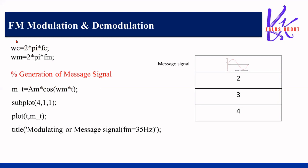To make our equations simpler, we define the angular frequency of the carrier as wc = 2π·fc, and the angular frequency of the message signal as wm = 2π·fm. Instead of writing 2π·fc·t or 2π·fm·t directly, we can use wc and wm in our equations.